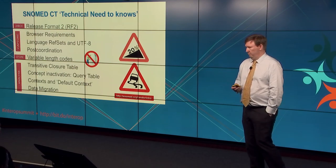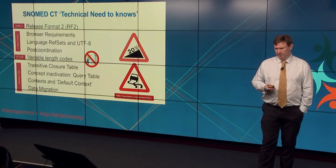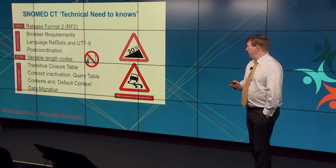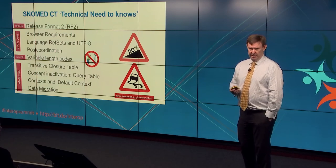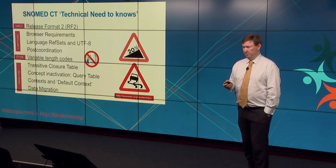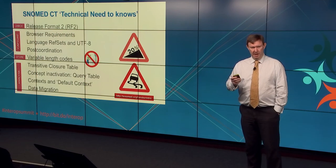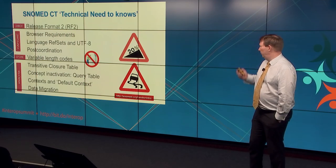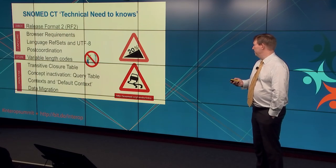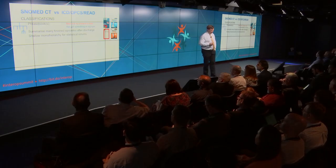Excel is the enemy of all terminologists, classifications, and coding people, because it has an unerring capacity to screw up your data, whether you're doing it in SNOMED, OPCS, ICD, Read, or genetics. Lots of people moan about it, but we don't have time to go into that area.